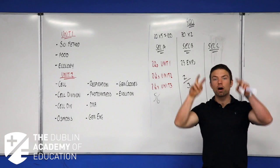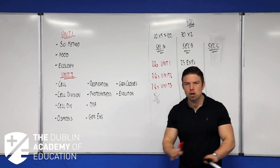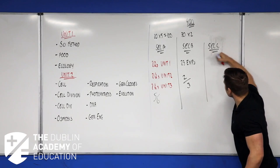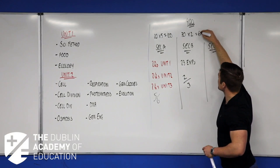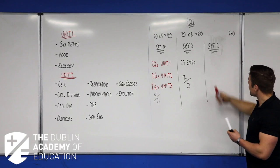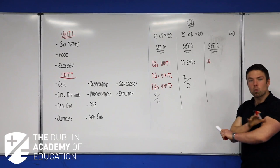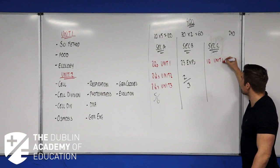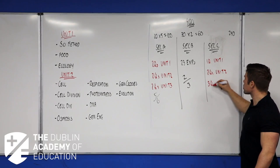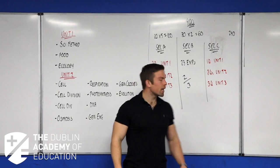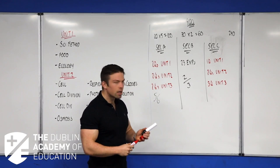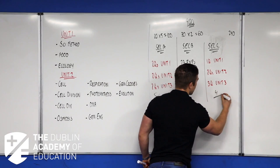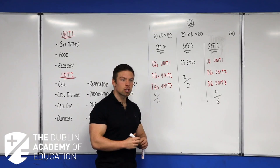Section C — which people call the long questions — is definitely not long questions; we'll talk about that as we go. Section C is worth 240 marks. One of those questions has to come from Unit 1, two from Unit 2, and three from Unit 3. But there are six questions and you only have to answer four of them, so you have a choice.